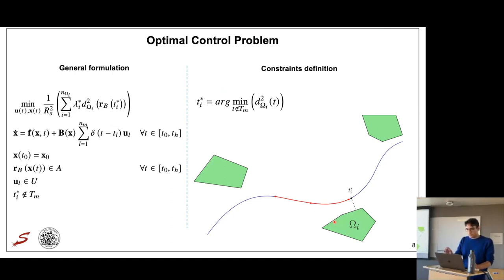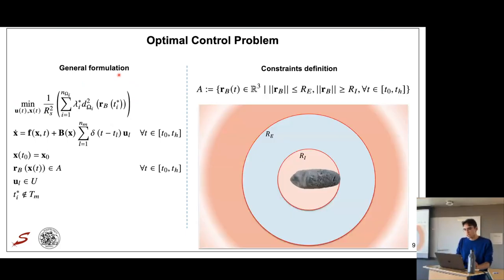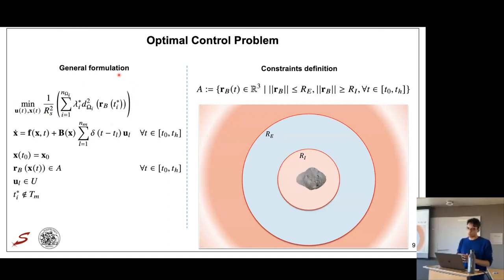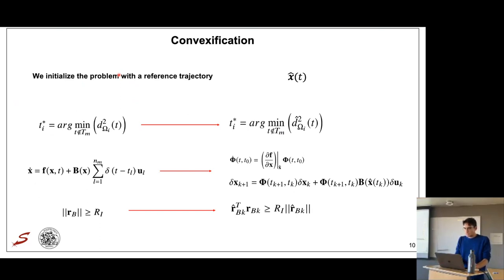The observation epoch is defined as the time of minimum distance of the trajectory from a given observation region, so the cost function is the linear combination of minimum distances from all desired observation regions. For the admissible domain, we have an impact radius and an escape radius. This is a non-convex problem; we solve it using Sequential Convex Programming (SCP), convexifying it starting from a reference trajectory.